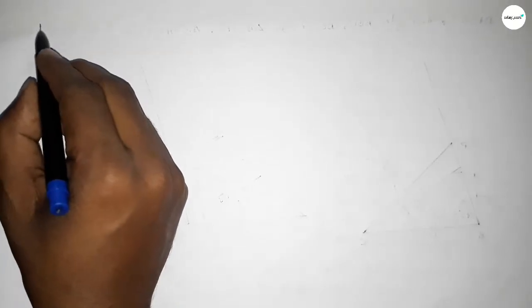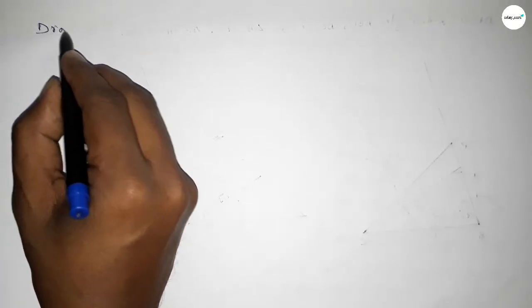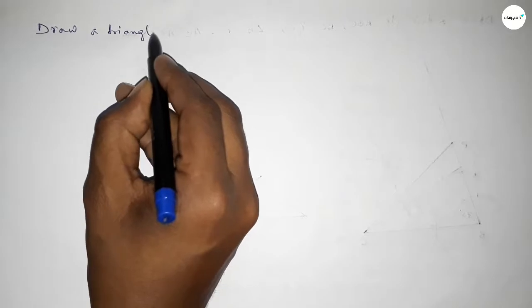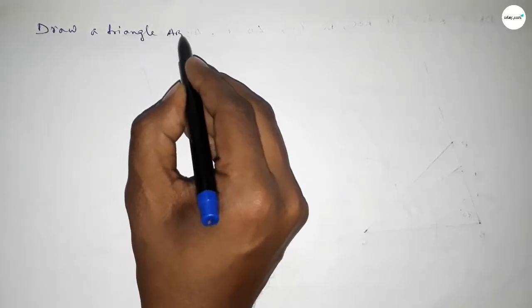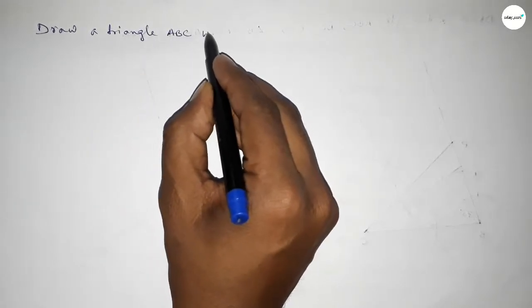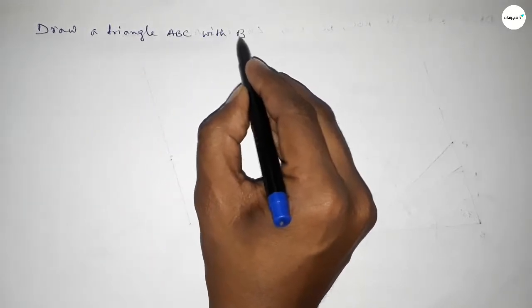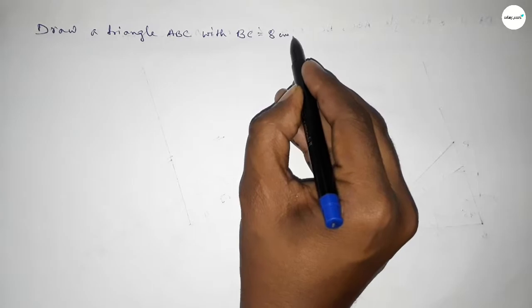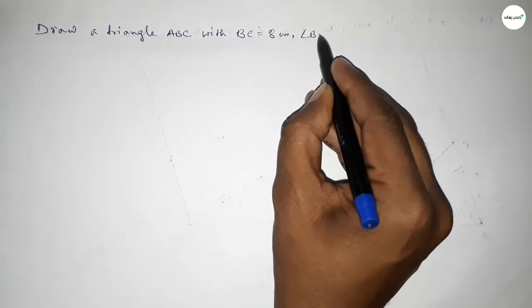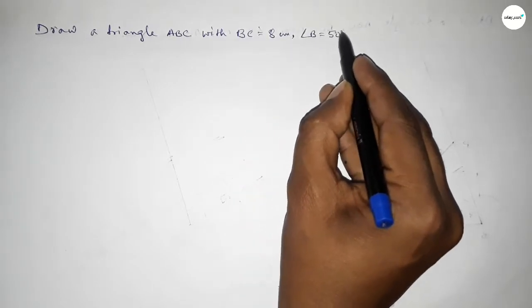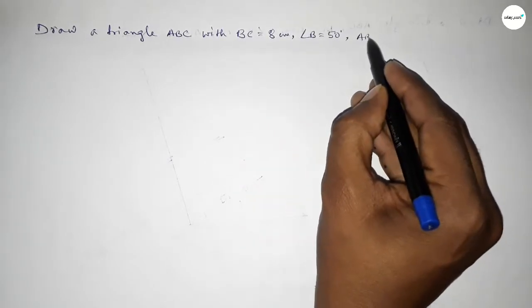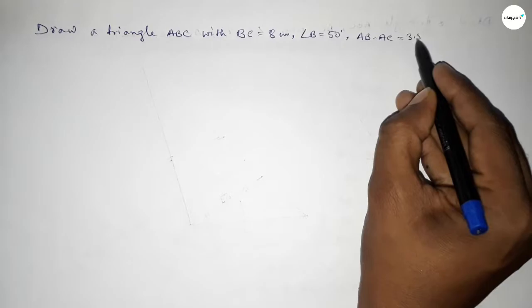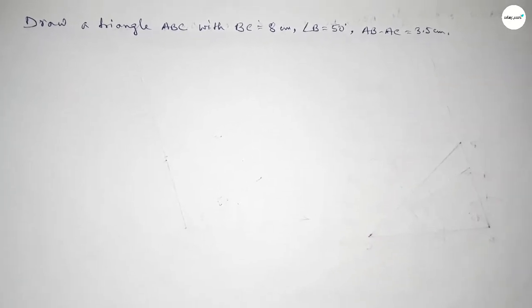Hi everyone, welcome to SI Share Classes. Today in this video we have to draw a triangle ABC with BC equal to 8 centimeters, angle B equal to 50 degrees, and AB minus AC equal to 3.5 centimeters. So let's start the video.